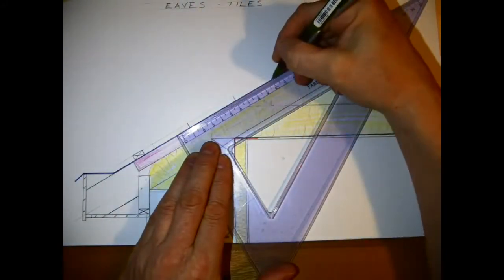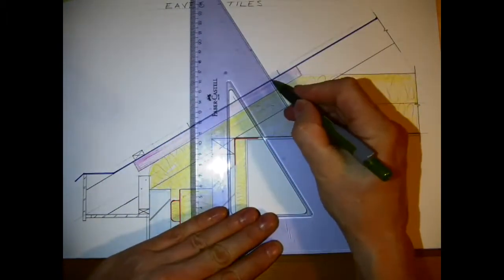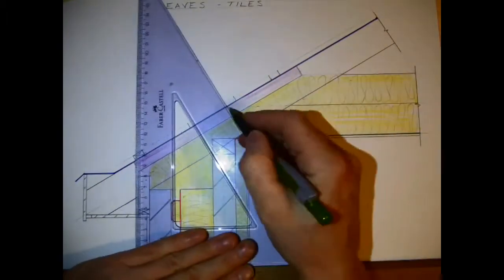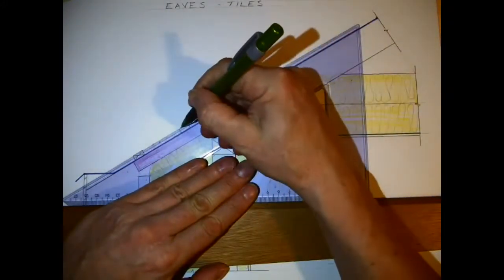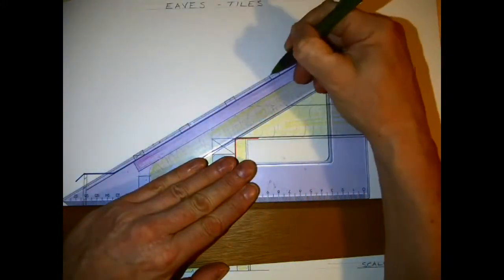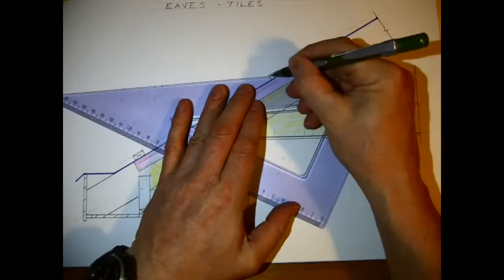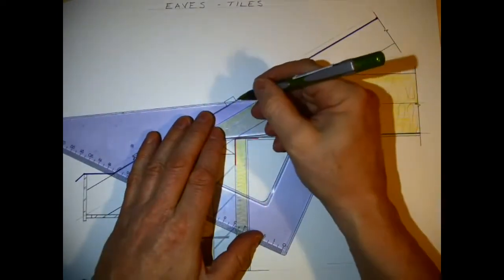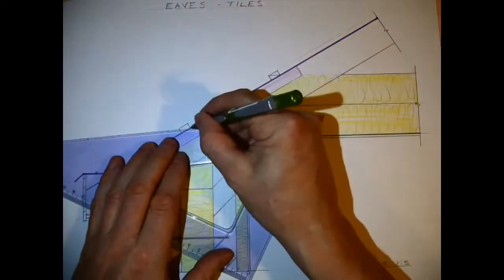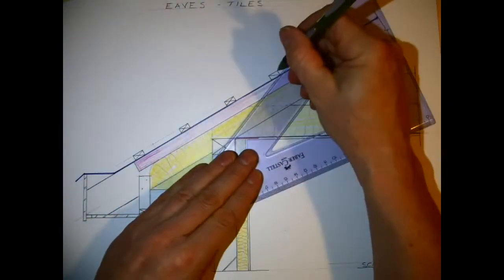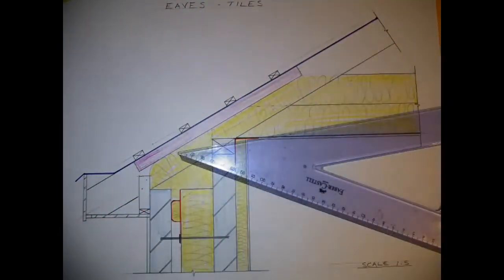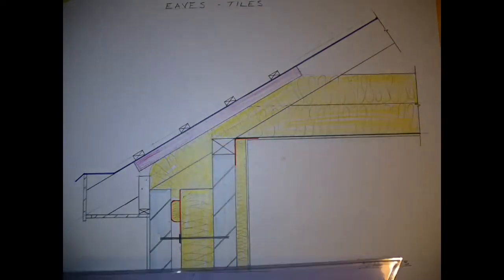Another thing worth noting is I've inserted the fascia to raise above the edge of the rafter cut to a height of 70 millimeters. That could be increased to 75 or even taken down to 60. That's the big difference between our tiling and our slating detail—the fascia is higher for the tiles than it is for the slates.